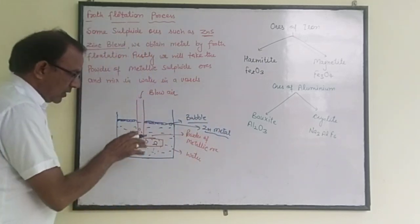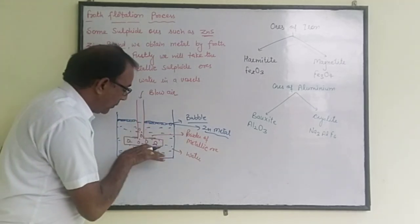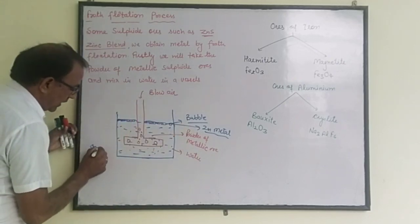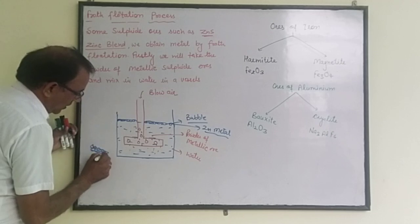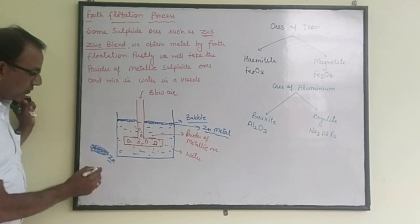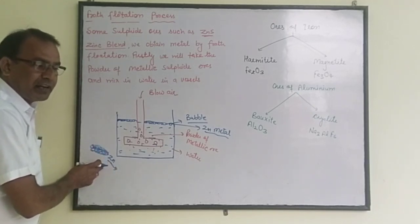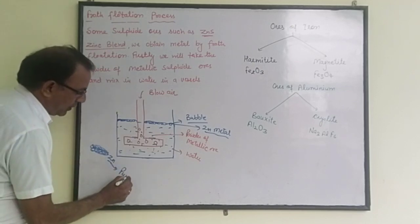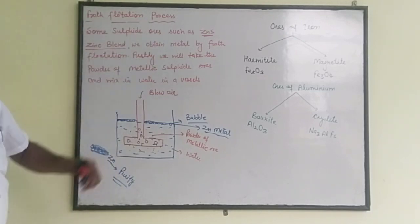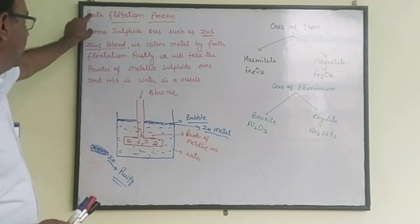The rest of the impurities remain below the water. As we remove the froth, the zinc metal is collected from the solution. After that, we purify this metal. This process is known as the froth flotation process because it involves bubbles, and bubbles are known as froth.